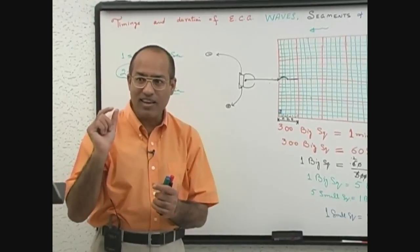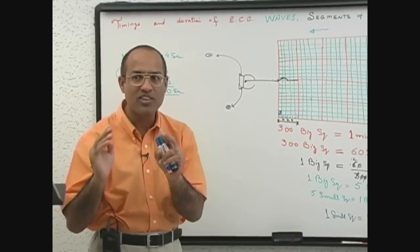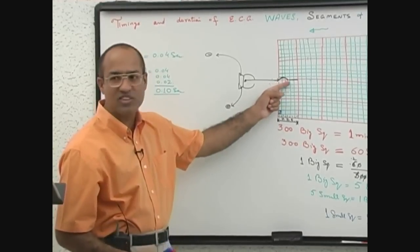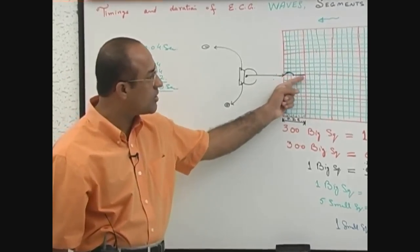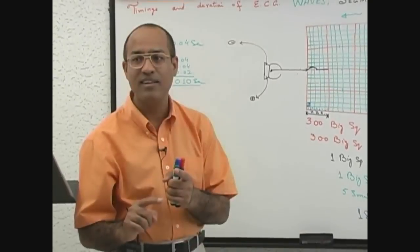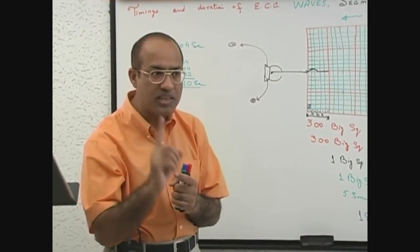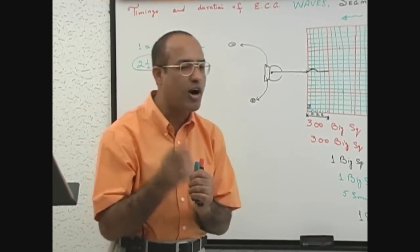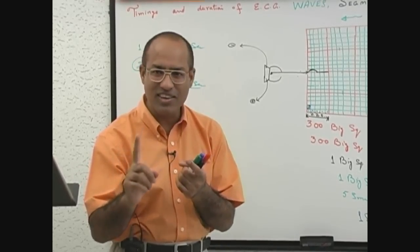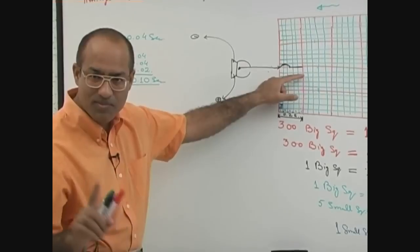This means the electrical current from the SA node took 0.1 second to spread over both atria and reach the AV node. When the current reaches the AV node, the needle will be static and neutral, making the PR segment. If the PR segment is again 2 and a half small squares, the duration of the PR segment is 0.1 second — meaning the current takes 0.1 second to pass through the AV node.